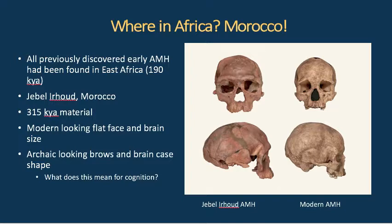We are looking at a site in Morocco called Jebel Irhoud. This is the earliest anatomically modern human site that has ever been found — recently found with dates published for it. Previous to this discovery, all of the material found was in East Africa. Morocco, of course, is in northern Africa, just south of Spain — a very distant place from where human origins were thought to have been located.